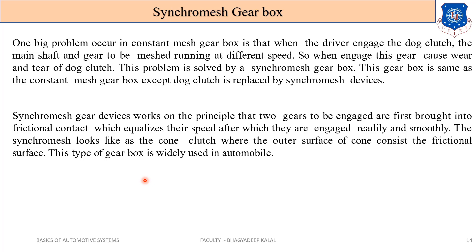The synchronizing device works on the principle that two gears to be engaged are first brought into friction contact to equalize their speed — working like a clutch plate. The friction contact is used so that the speed is equalized, and after which they are engaged readily and smoothly. The synchromesh looks like a cone clutch, where the outer surface of the cone consists of a friction surface. This type of gearbox is widely used in automobiles.